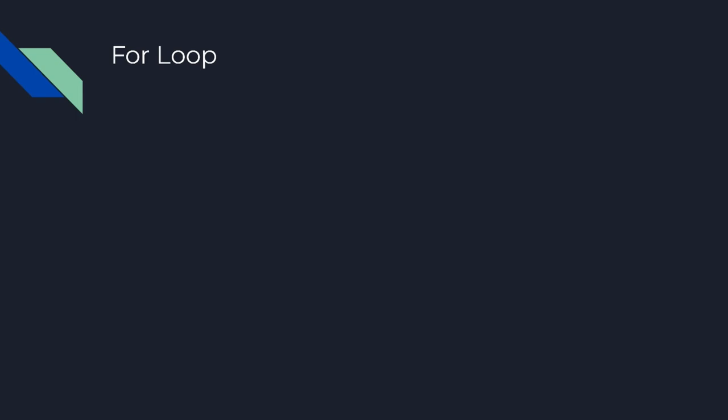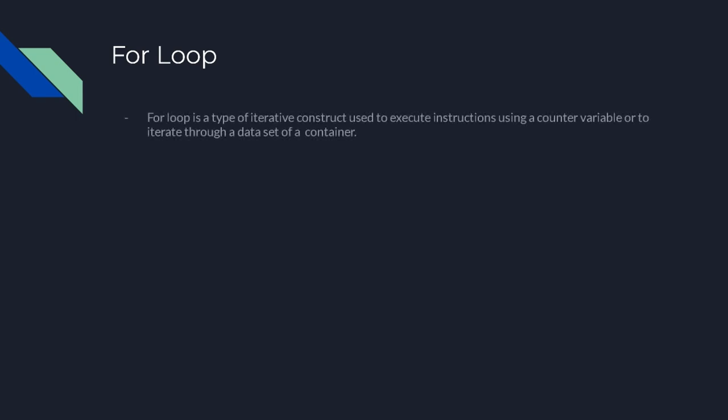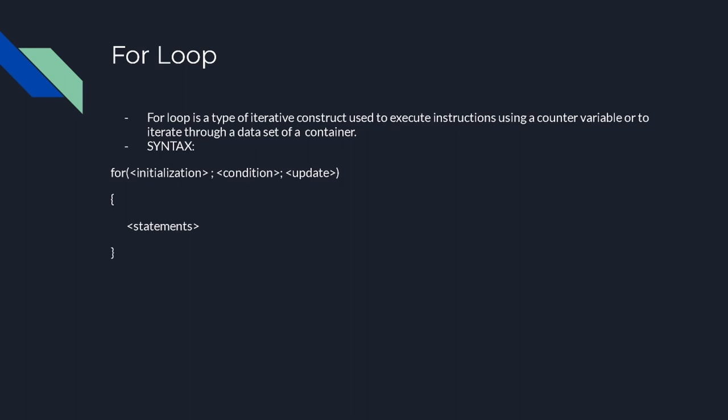The for loop is a little more complicated. We basically use a counter variable for a standard for loop, or you also have a range-based for loop. You could also use iterators, but we'll just go through the standard for loop with a counter variable and a range-based for loop. The syntax is: for, and in parentheses you have the initialization expression, the condition expression, and the update expression.